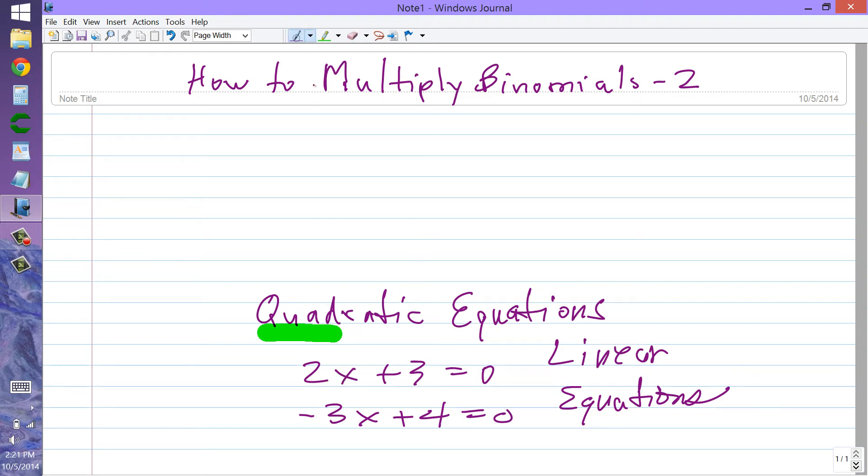2x plus 3 equals zero. Now, if you've had any algebra or even pre-algebra, you should be able to figure out you can subtract 3 from either side of this equation to get 2x equals minus 3. Then you can divide either side of this equation by 2 to get x equals minus 3 halves.